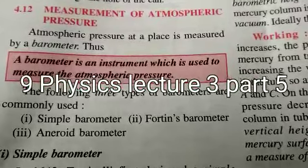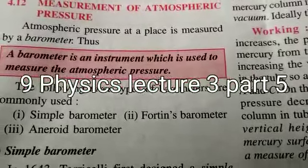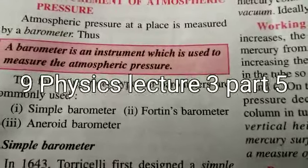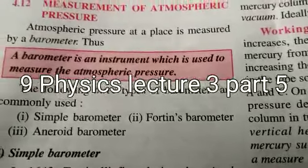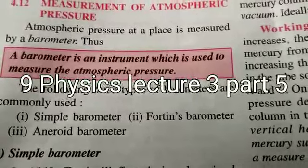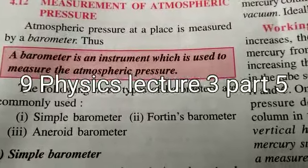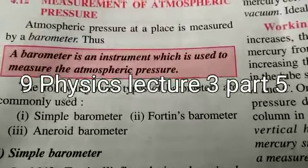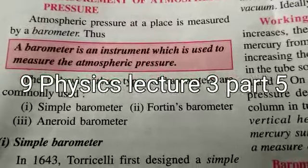If we want to calculate the mass of an object, we have beam balance. If we want to calculate the weight of the object, we have spring balance. If we want to measure the liquid, it is in liters form. We have the liter to calculate the quantity or volume of the liquid. Hence, we have different devices to do the work.